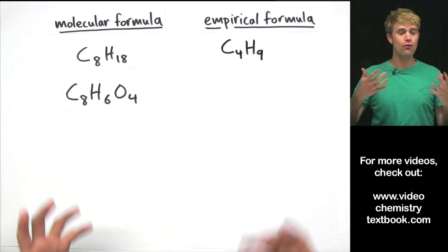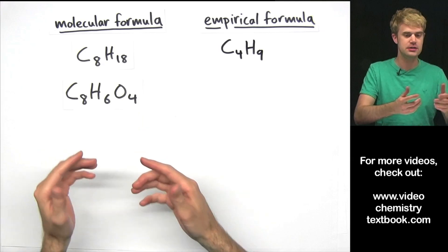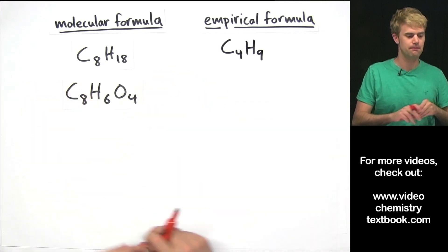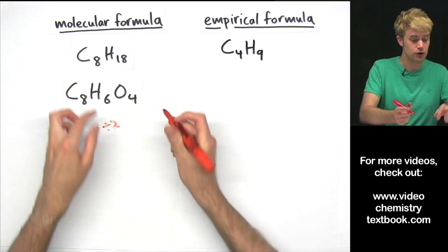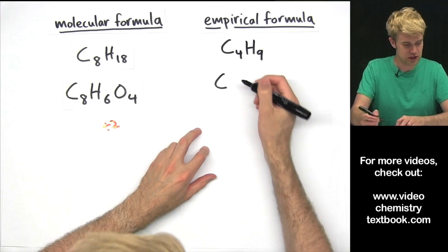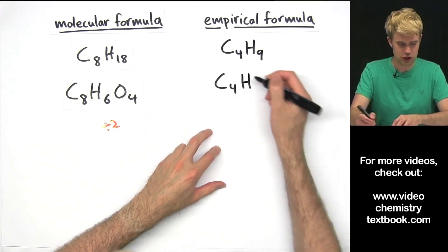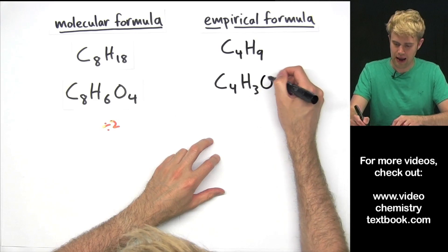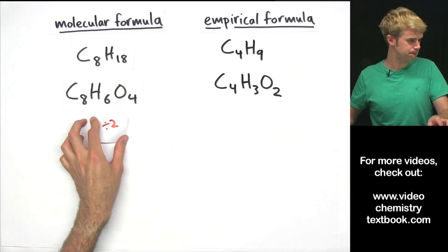C8H6O4 — as before, we want to ask what's the biggest number that we can divide all of these by to get this as reduced as possible. We can divide all of these numbers by 2, just as we did before, so the empirical formula is going to look like: C, 8 divided by 2 is 4; H, 6 divided by 2 is 3; and O, 4 divided by 2 is 2.